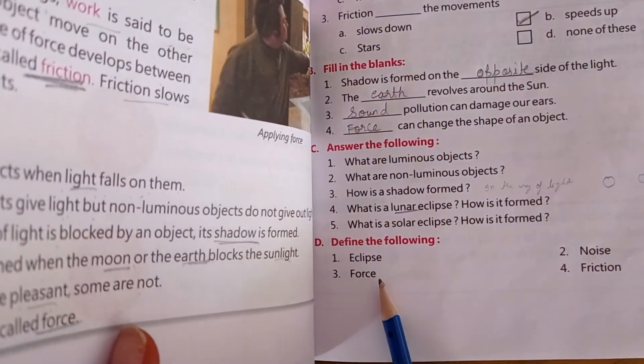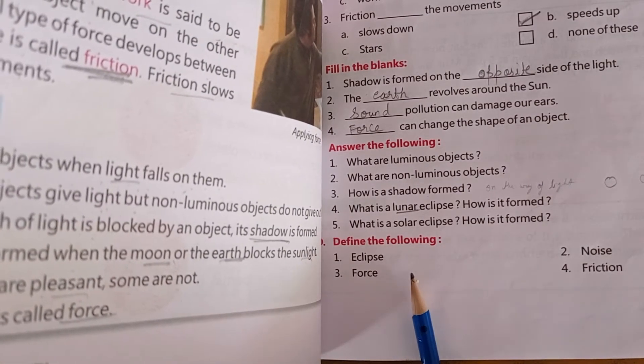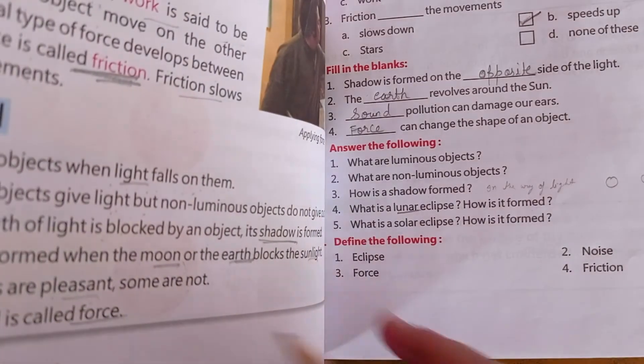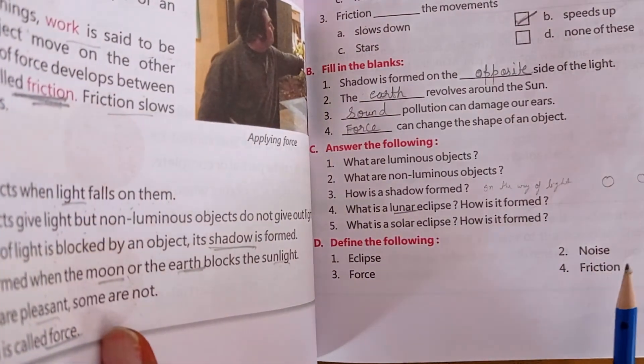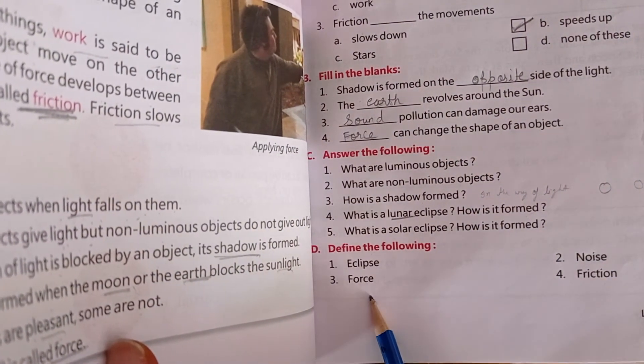Define the following. What is eclipse? Eclipses are formed when the moon or the earth blocks the sunlight. Noise is unpleasant sound. Next is force. Any push or pull is known as force.